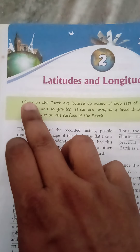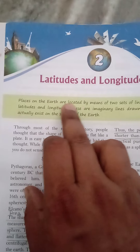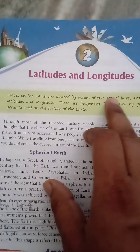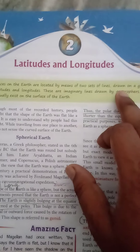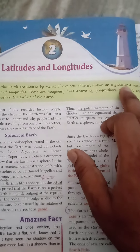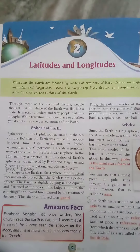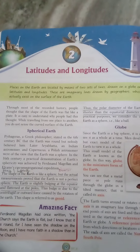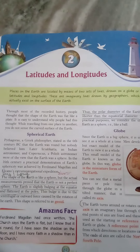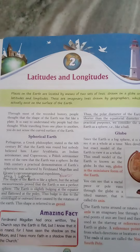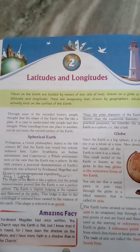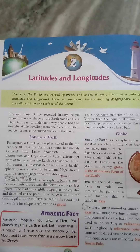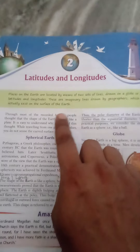Places on the earth are located by means of two sets of lines drawn on a globe or a map — latitudes and longitudes. When we look at a globe, we can see two lines in the middle of the earth. We call these latitudes and longitudes. These are imaginary lines drawn by geographers.